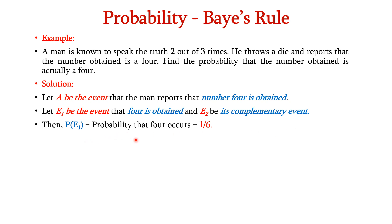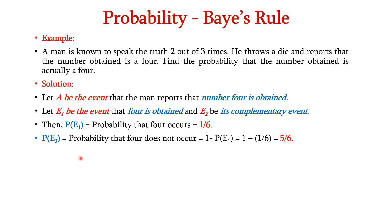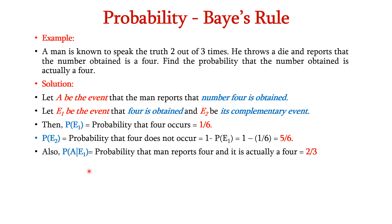P(E1) is the probability that 4 occurs. The denominator is the total number of outcomes: in a die we have 6 possible outcomes, and the numerator is the possibility of occurrence of 4, which is 1. So P(E1) equals 1/6. P(E2) is the probability that 4 does not occur, written as 1 minus P(E1), that is 1 minus 1/6 equals 5/6. P(A given E1) is the probability that the man reports 4 and it is actually a 4. He speaks 3 times total and speaks the truth 2 times, so it is 2/3.